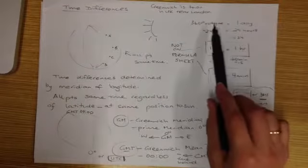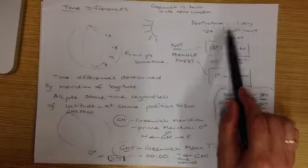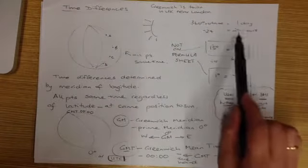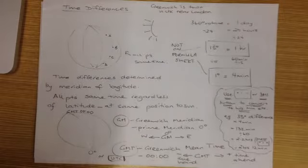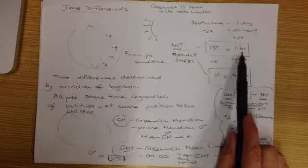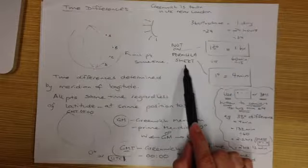So we said to look at time differences we needed to think about the earth, 360 degrees, an entire rotation of the earth takes one day. So that's 24 hours, dividing both by 24 hours and we get a conversion which is 15 degrees is equal to 1 hour. Remember these are not on your formula sheet, you need to remember them.